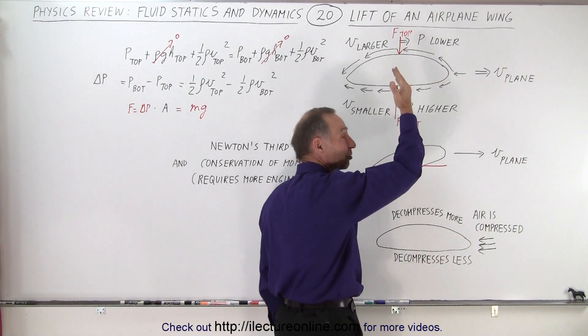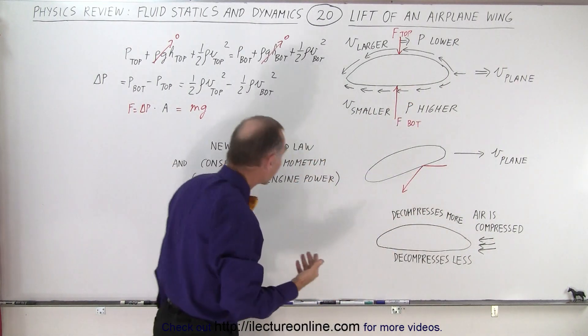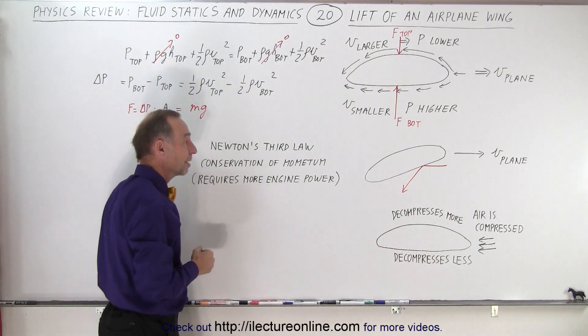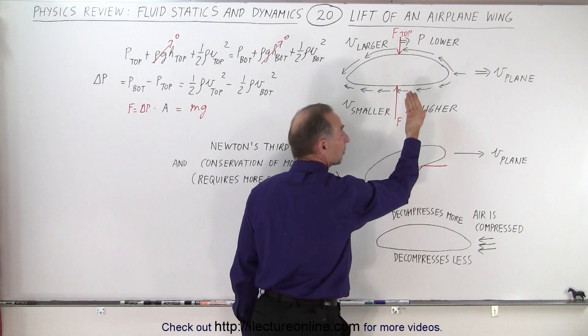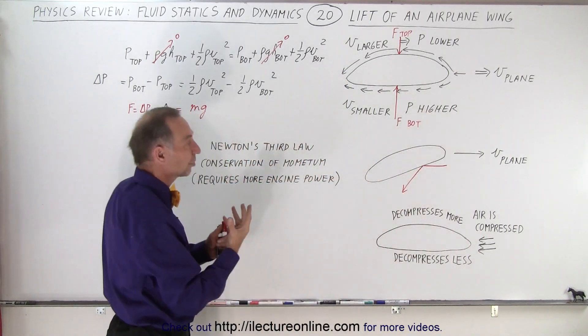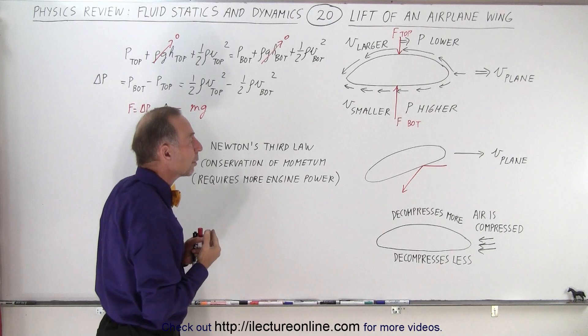For every action there's an equal and opposite reaction pushing the wing upward or you can think of it in terms of conservation of momentum. A certain amount of air is being pushed down and so we have an equivalent amount of momentum that needs to be up which is the force that causes the airplane wing to go up.